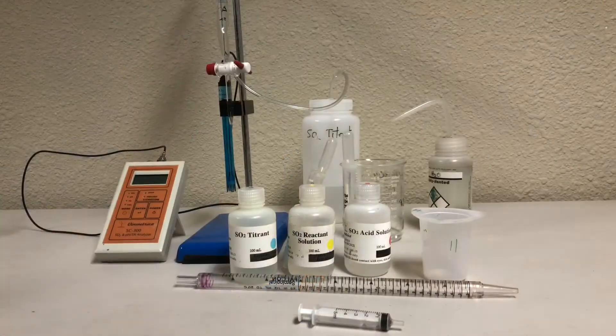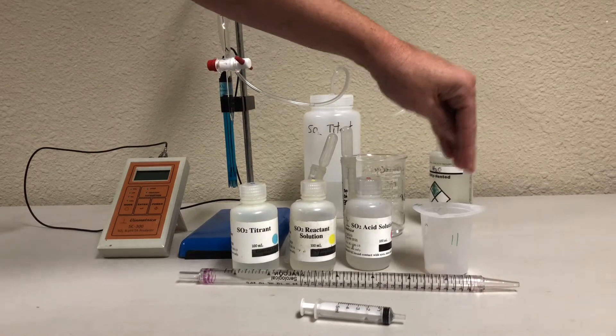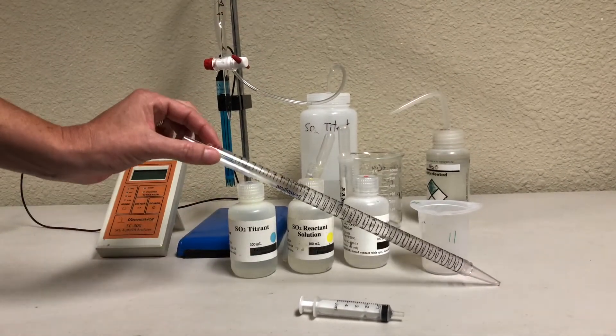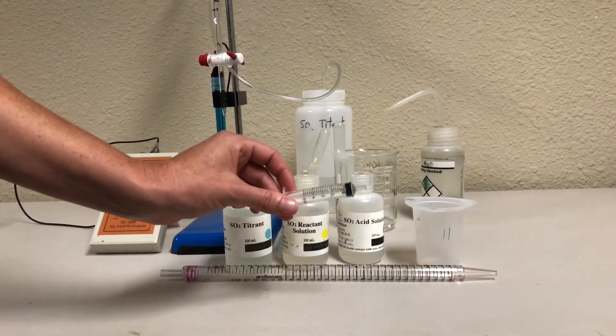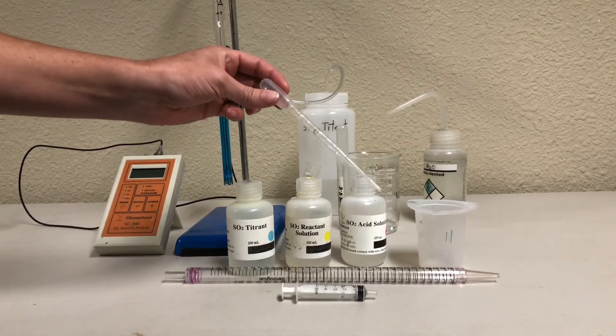To test for free SO2 you will need your three SO2 reagents, your titration beaker for your wine sample, your 25 mil pipette which you use to get your wine sample, a 5 mil syringe, and two 3 mil transfer pipettes.